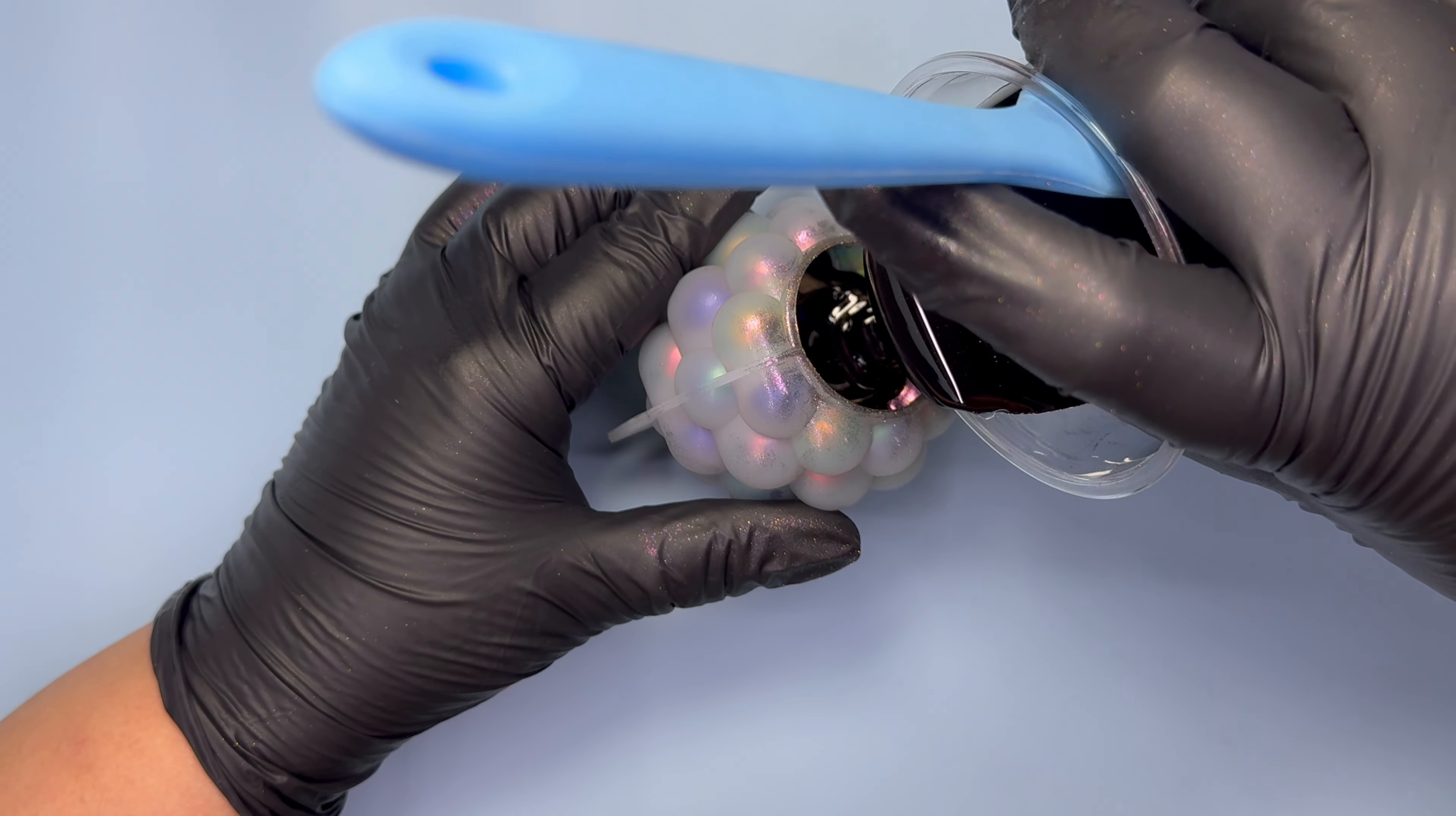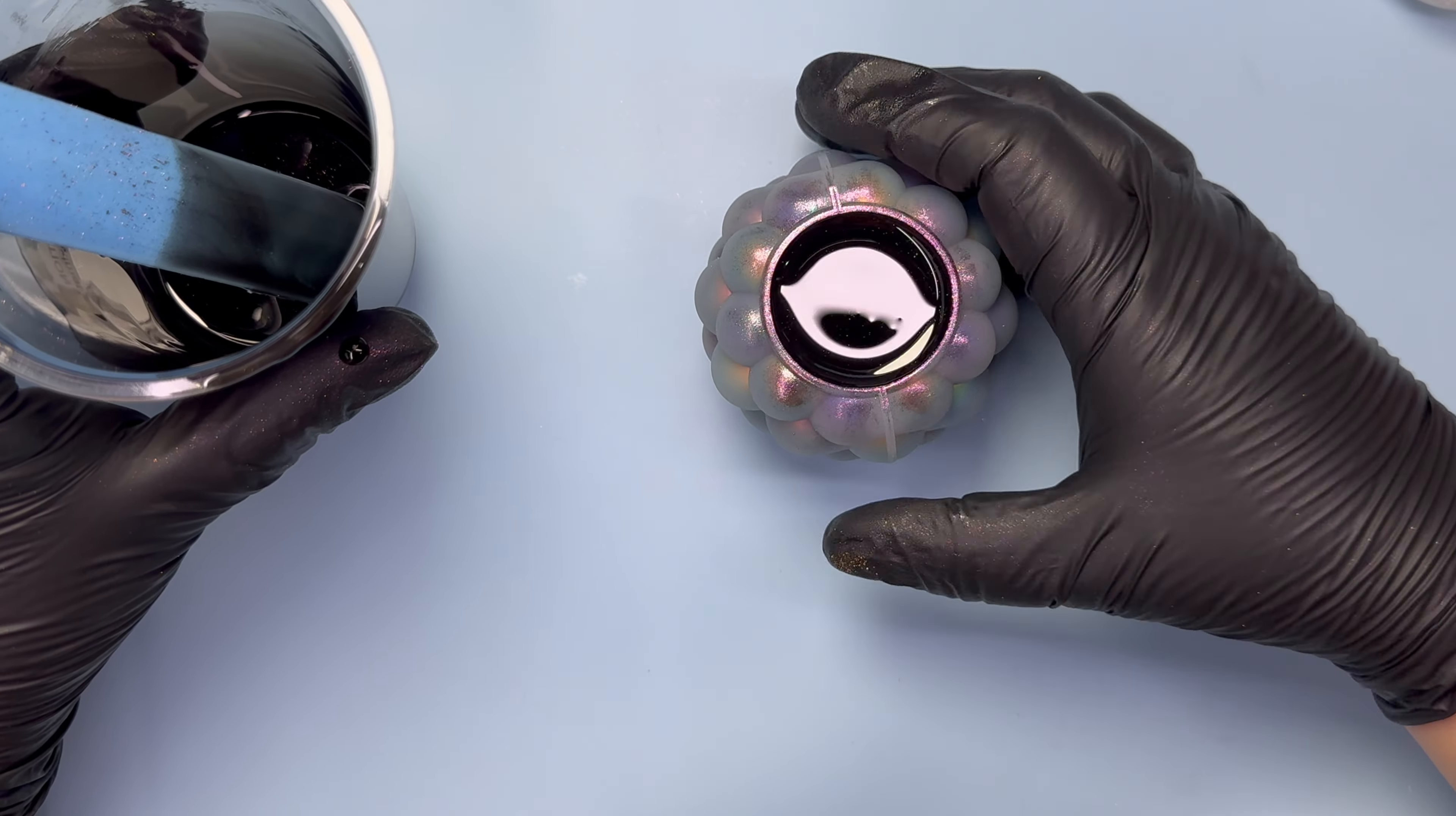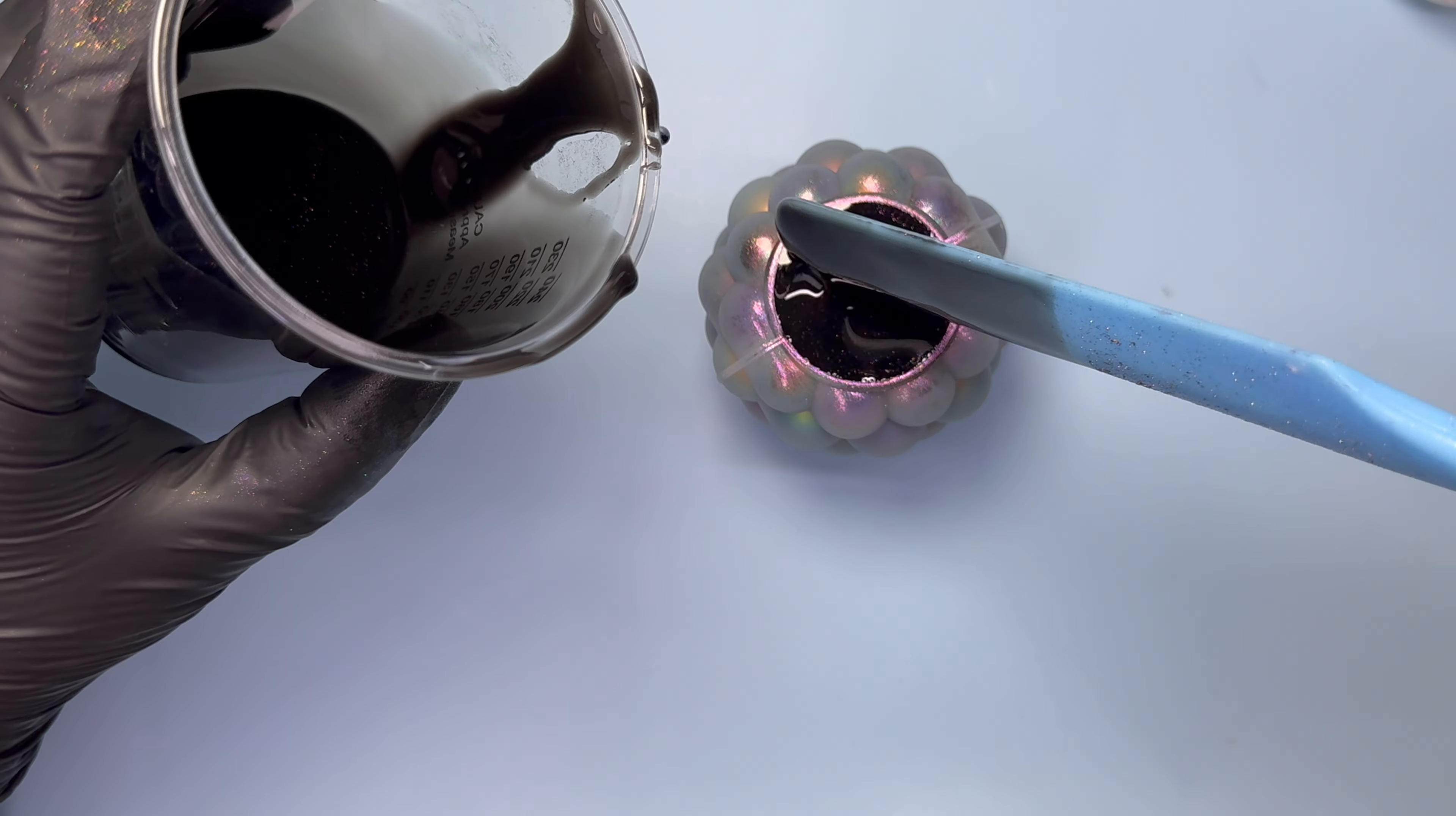Pour the mixture into the mold and just tap it softly to release any trapped bubbles. This resin is jet black. Once it cures, it has a beautiful shine, not that you're going to see it—the pigments will be hiding the black.